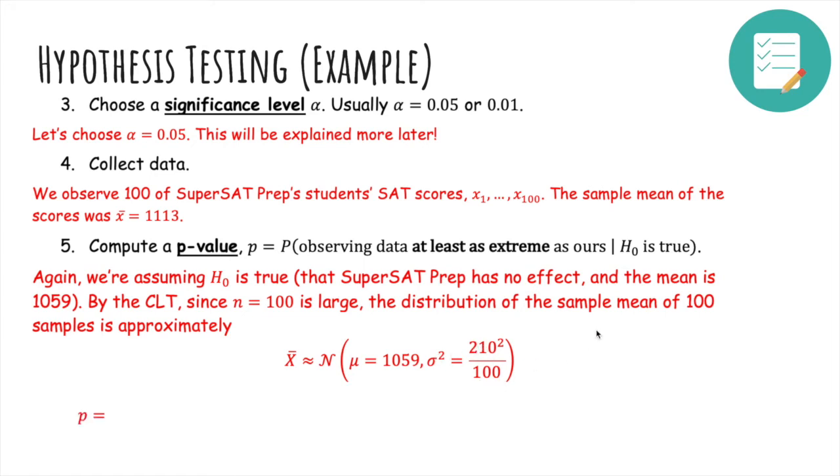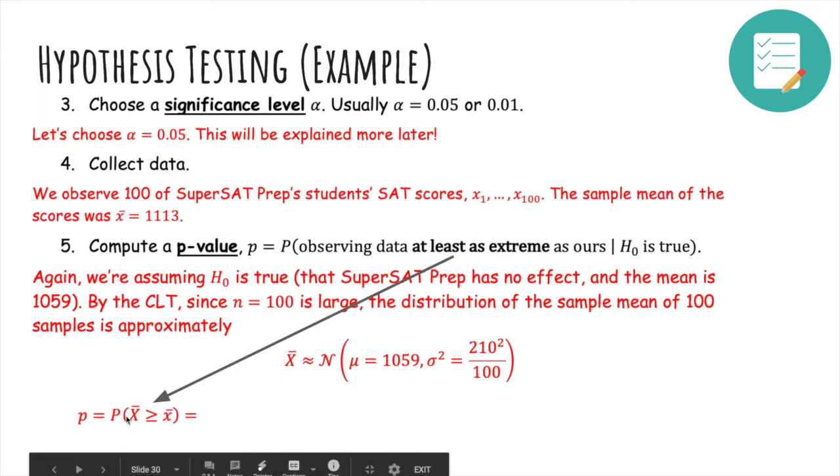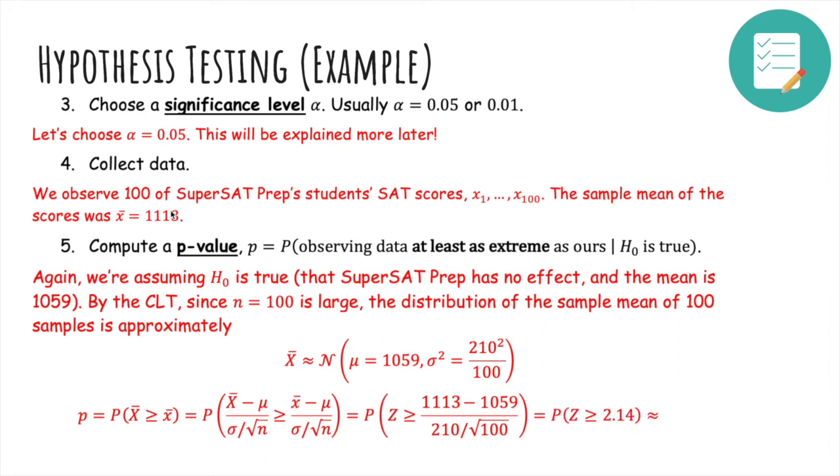So the p-value is then the probability that if we took an arbitrary sample mean, that it would be at least as extreme as the one we computed, which was 1113. So we can just standardize, look up a Φ table like always. I'm going to let you work on that because you know how to do this procedure. And we end up getting 0.0162. So our p-value is 0.0162.